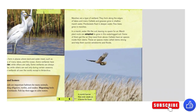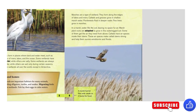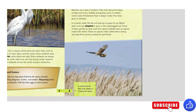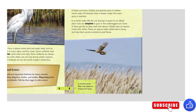Few trees grow in marshes. In a marsh, water fills the soil, leaving no space for air. Marsh plant roots are adapted to grow in this waterlogged soil. Some of them get the air they need from above. Cattails have air spaces inside their stems. These air spaces make cattail stems strong and help them survive windstorms and floods. A marsh harrier flies over reeds as it hunts for food.